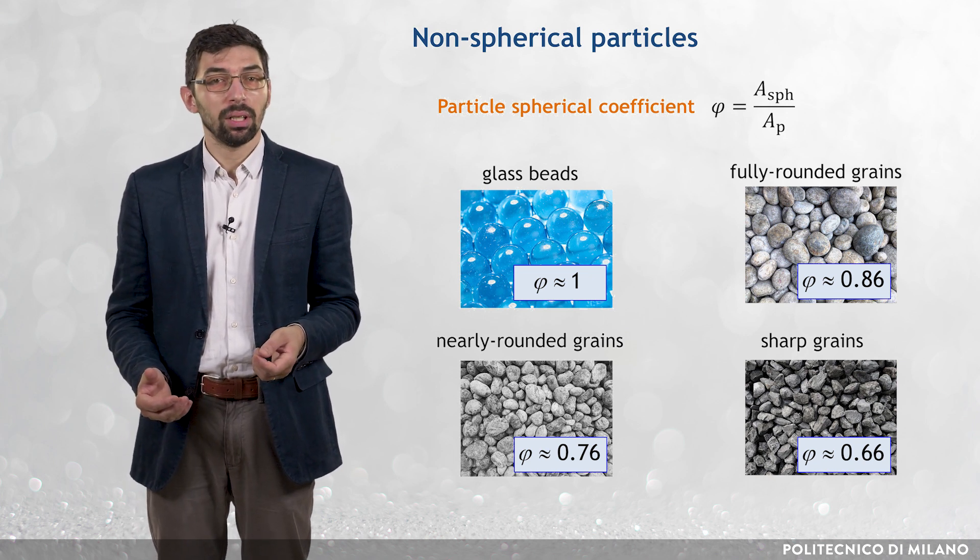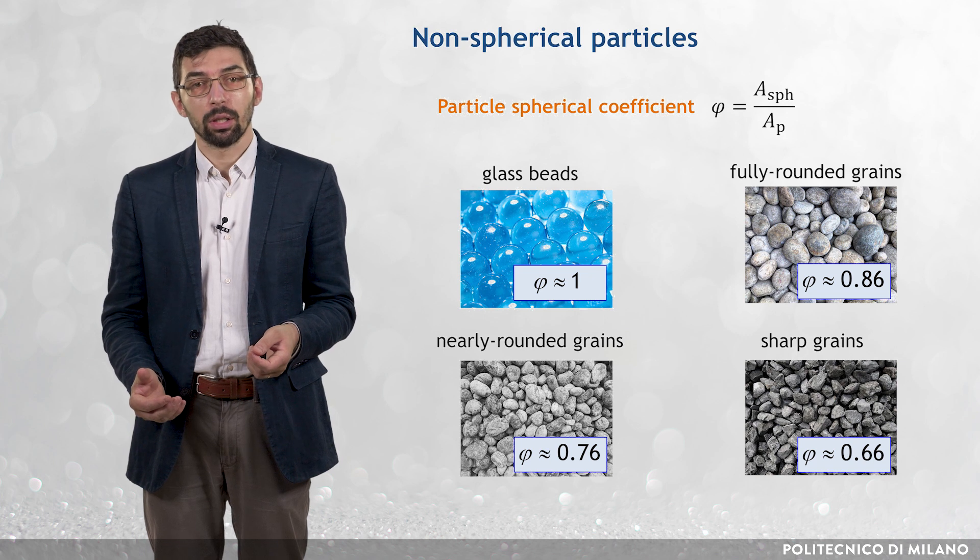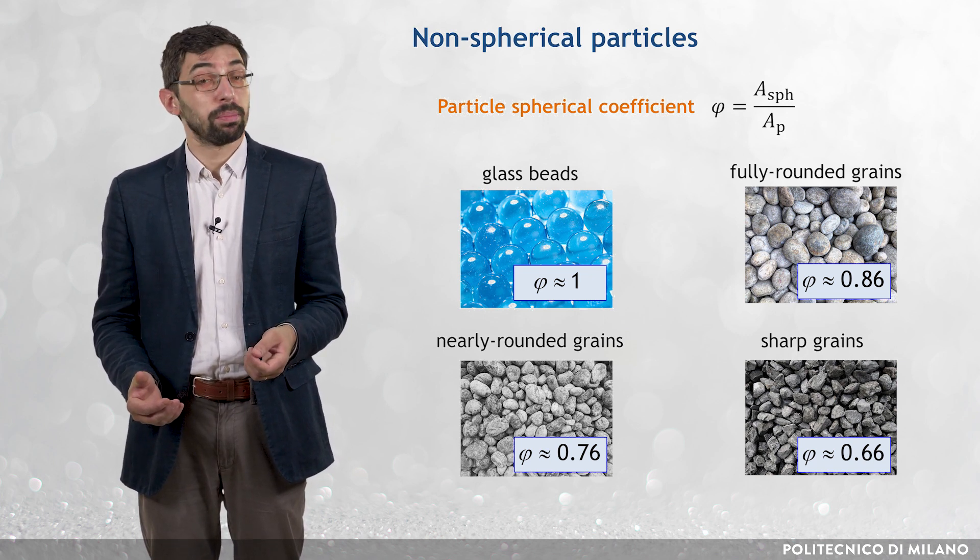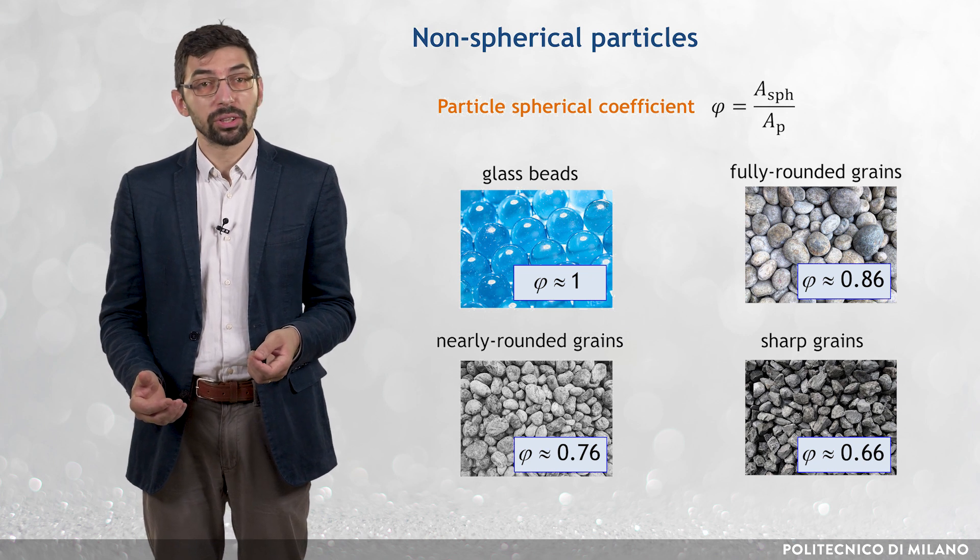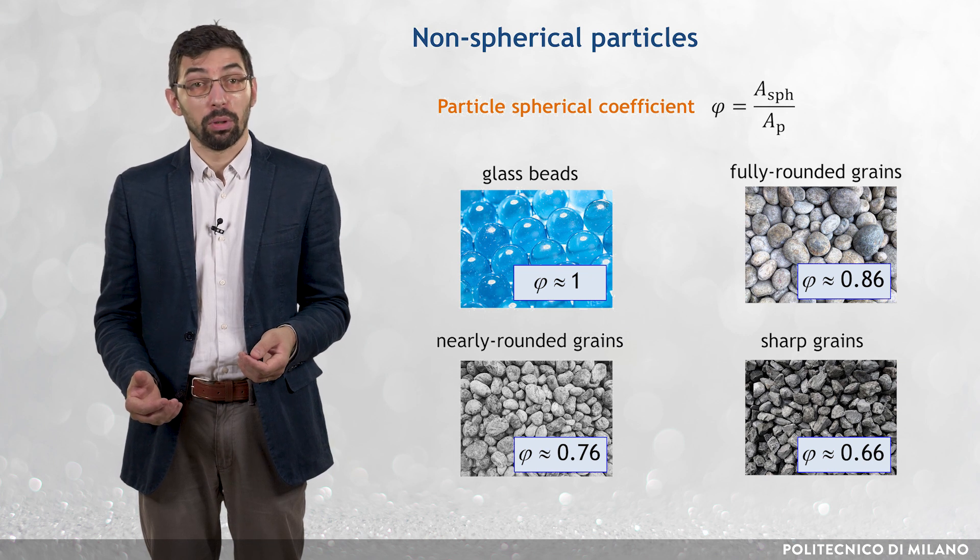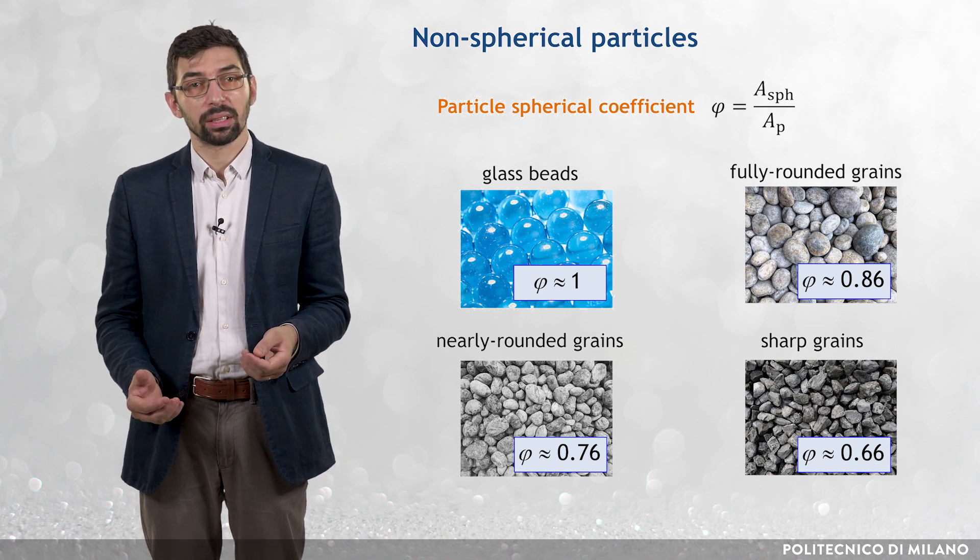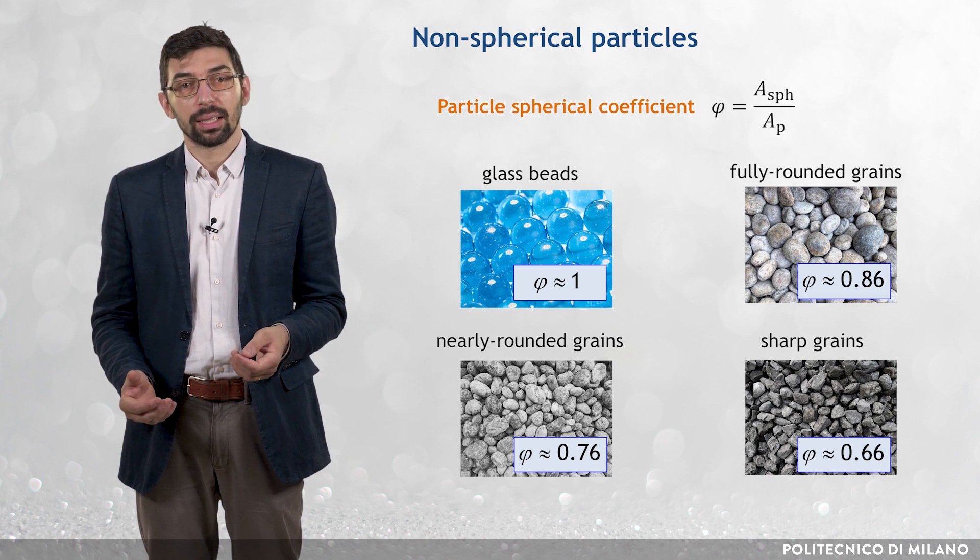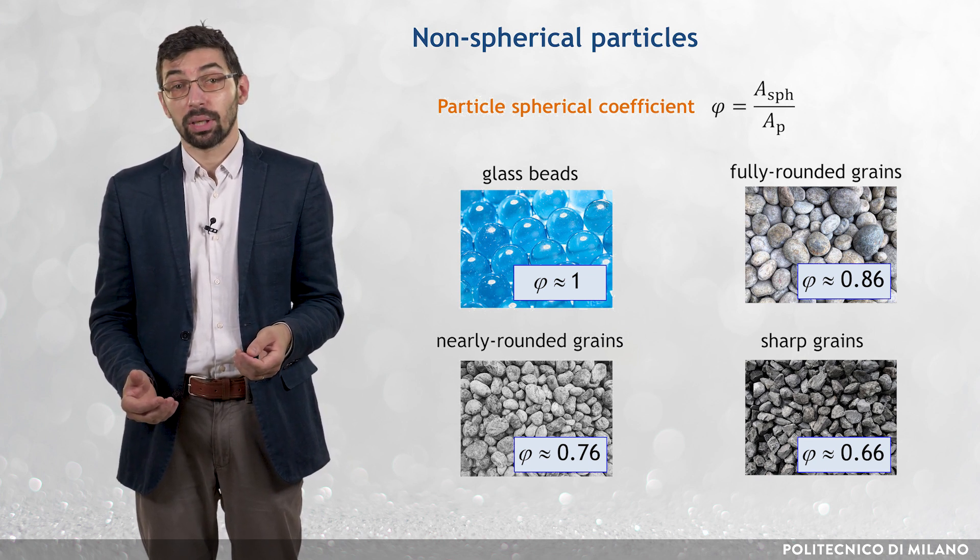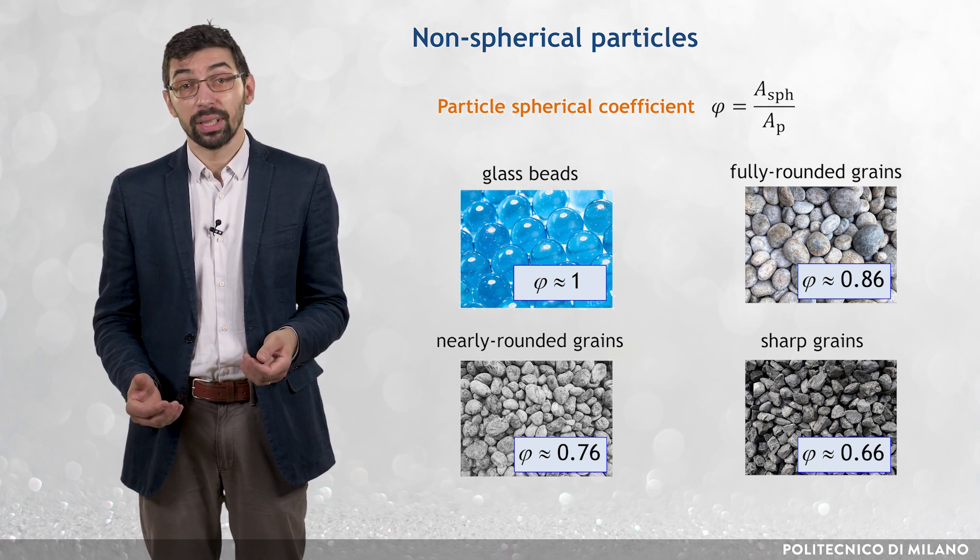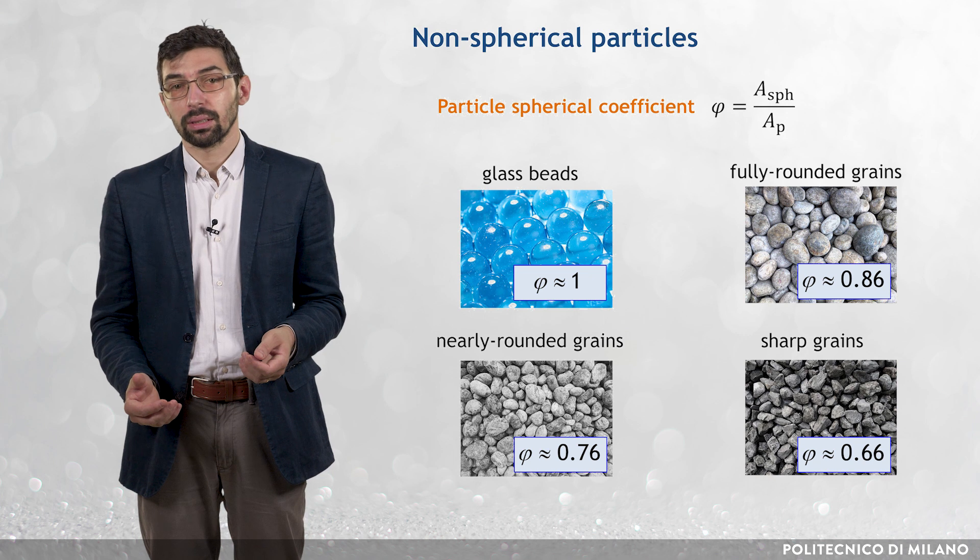and a rough indication can be obtained by referring to the particle sphericity coefficient Φ, defined as the ratio between the surface area of the volume equivalent sphere and the actual surface area of the particle. It has already been mentioned that Φ is equal to 1 for perfect spheres, whereas 0.66, 0.76 and 0.86 are the characteristic values for natural materials with sharp grains, nearly rounded grains and fully rounded grains, respectively.